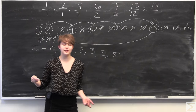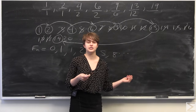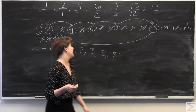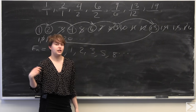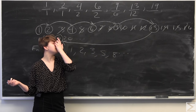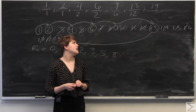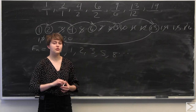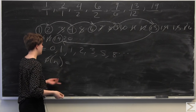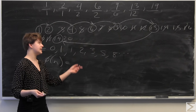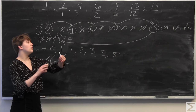Now we need to figure out the pattern for the denominators. The key giveaway is the fraction 13/12. If you're familiar with the Euler-Totient function, or Euler-Phi function, phi(n) counts the number of integers less than n that are coprime — or relatively prime — with n.